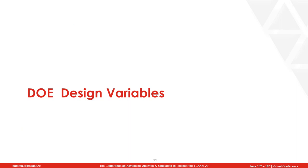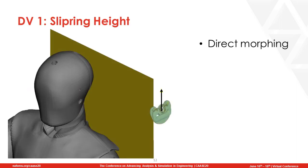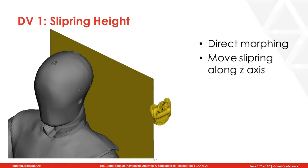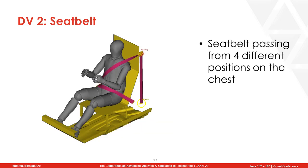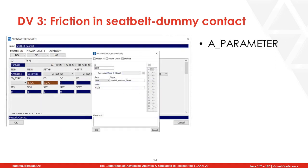After setting up the sled test, it is time to define the design variables. The first design variable is the shoulder slip ring height. Using direct morphing, we will move the slip ring along the Z axis and the morphing parameter will be created. The second design variable is the position from where the seatbelt passes from the chest of the dummy — four different belt positions will be created for each slip ring height using a Python script run from the seatbelt tool. The last design variable is the friction in the seatbelt-dummy contact, defined by an A parameter to modify the relevant LS-Dyna keywords.